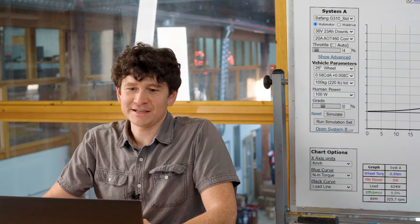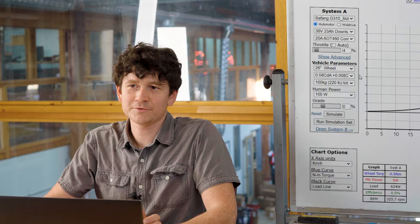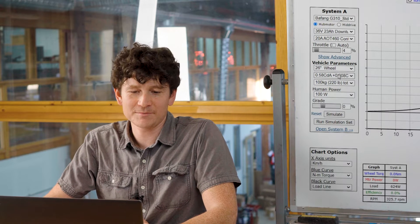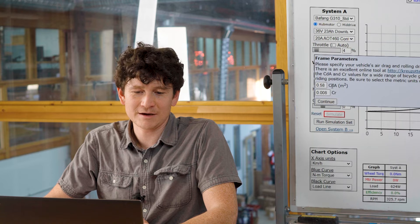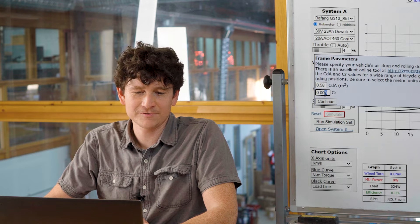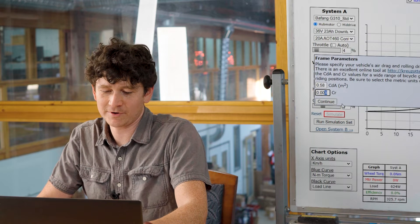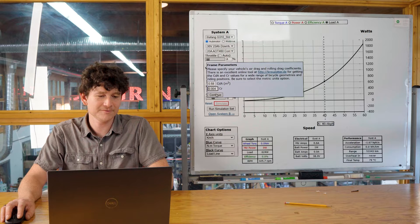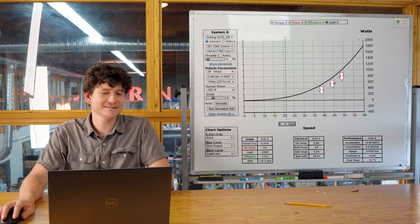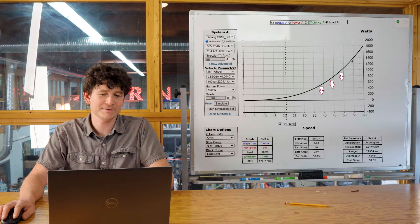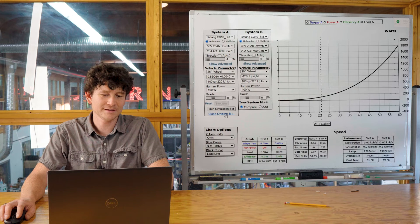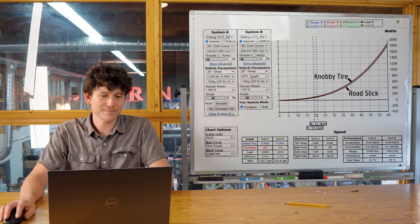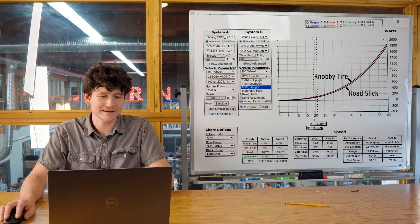Now what happens if we change the situation? Let's switch from a mountain bike tire to a higher pressure road tire. That would be reducing the coefficient of friction from 0.008 to 0.004. Now we can see a very slight reduction across the entire speed range. What I'll do is open a second simulation so we can compare these two things side to side.